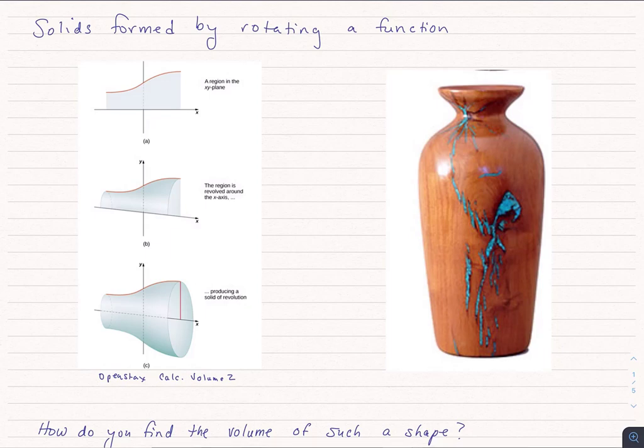To find the volume of the shape, what we've done is we've taken the cross-sectional area of that shape, found the formula for that, and then integrated that area dx from A to B.